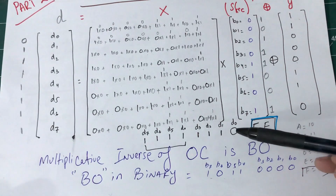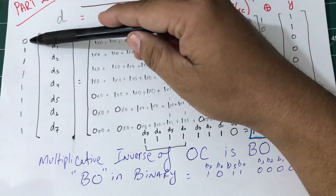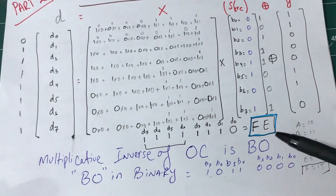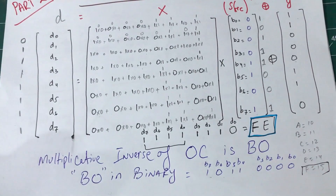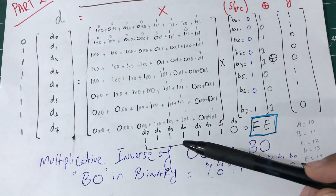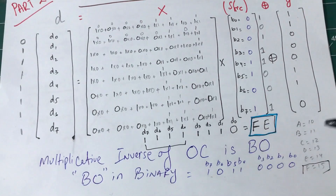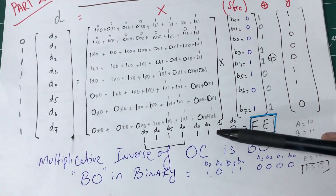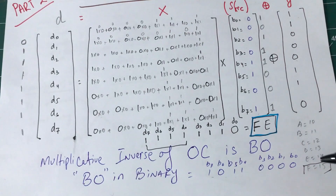After the matrix multiplication, we pick up these values starting from the least significant bit D0 going up to D7. So D0 is 0 and the rest are 1. Converting to hexadecimal: the first four bits are 1,1,1,1 which equals 15, and in hex that's F. The next four bits 1,1,1,1 give 8+4+2 = 14, which is E. So the result is FE.